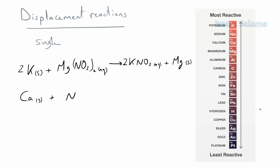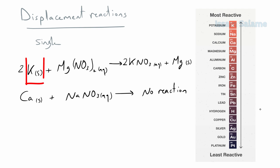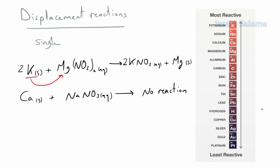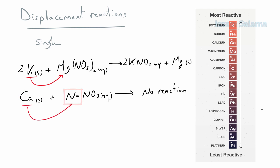Another example: the reaction of solid calcium with sodium nitrate. As you can see in the activity series, sodium is higher than calcium, so calcium cannot displace sodium and there will be no reaction. Always, before writing the products of a single displacement reaction, check the activity series. If the free metal is more reactive than the metal in the compound, it will displace it and there will be products. If the free metal is less reactive, there will be no reaction.